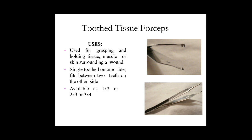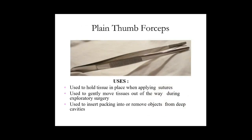The next one is the plain thumb forceps. This is a plain one — it does not have any tooth. It is mainly used to hold soft tissues, such as when applying sutures to soft tissues, and to gently move tissues out of the way during exploratory surgeries, such as moving organs from one side to another. It is also used to insert packing into or remove objects from deep cavities — for example, foreign bodies in the nose or ear, even insects, scare packs, or tubes inserted in the body. Thumb forceps are commonly used in all clinical areas.